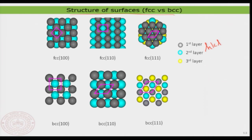Depending on the type of Miller index — whether it is a 100, 110, or 111 surface — they are going to have basically different shapes. As we also saw in a previous lecture, this is quite decisive in thinking about the reactivity of the surface. For example, the 110 and 100 surfaces are much stronger in terms of adsorption compared to a 111 surface.